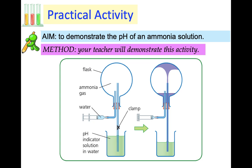If we were in school, this is one of the experiments I would have set up to show you. This setup involves a flask containing ammonia gas, hooked up to a syringe of water and connected to a pH indicator solution in water, held up by a clamp. What we do is press down on the syringe, forcing water into our flask containing ammonia. The ammonia reacts with the water and dissolves in it, creating a vacuum. The vacuum pulls the pH solution from the beaker into the flask and it produces a pink fountain.